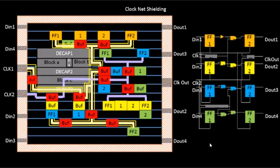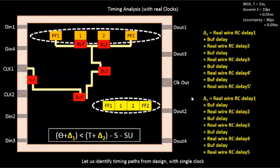After clock net shielding, the next step is to do a timing analysis with real clocks. Now we have the clock nets placed and shielded, so this is the point where we perform timing with real clocks even though data paths are not yet routed. That's part of the ideal flow. I'll talk about this particular timing equation and how the clock delay looks in the next video. Thank you.